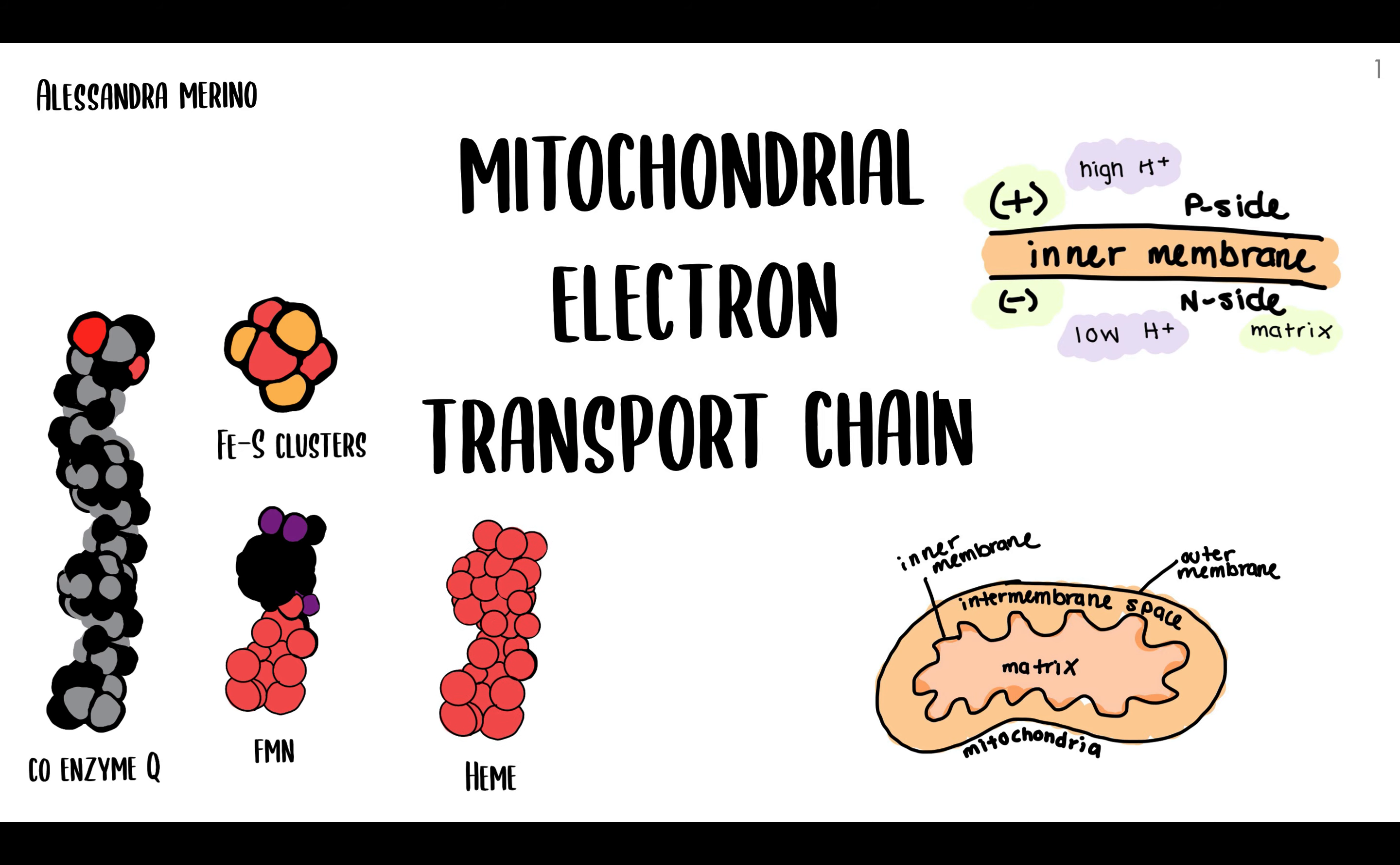Lastly, we have heme groups, which are found in Complex 3 and Complex 4. These heme groups are also found in cytochromes, which are another membrane-bound electron carrier. It's not shown here, but it will be on the next slide. So now that you have all the basics down, let's move on to the actual multi-enzyme complexes in the chain.